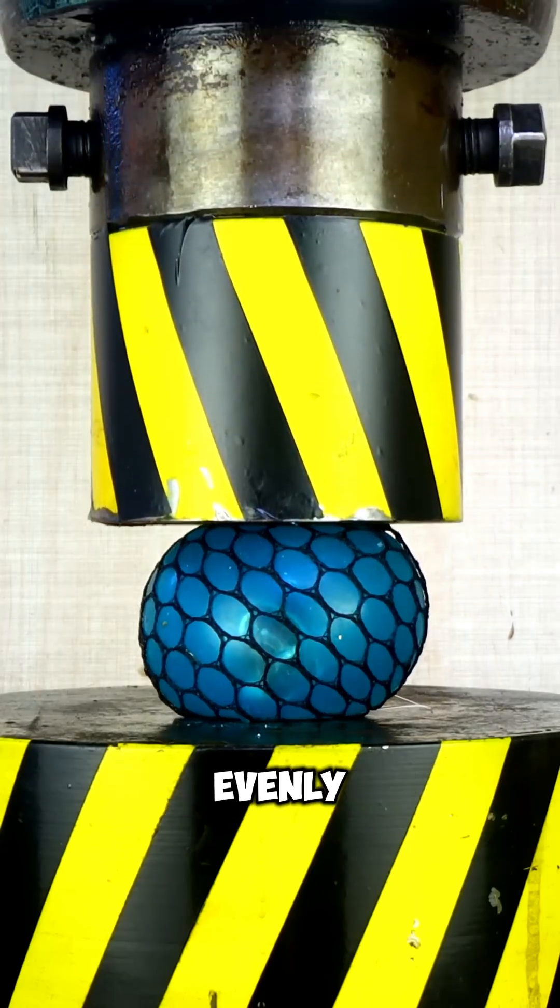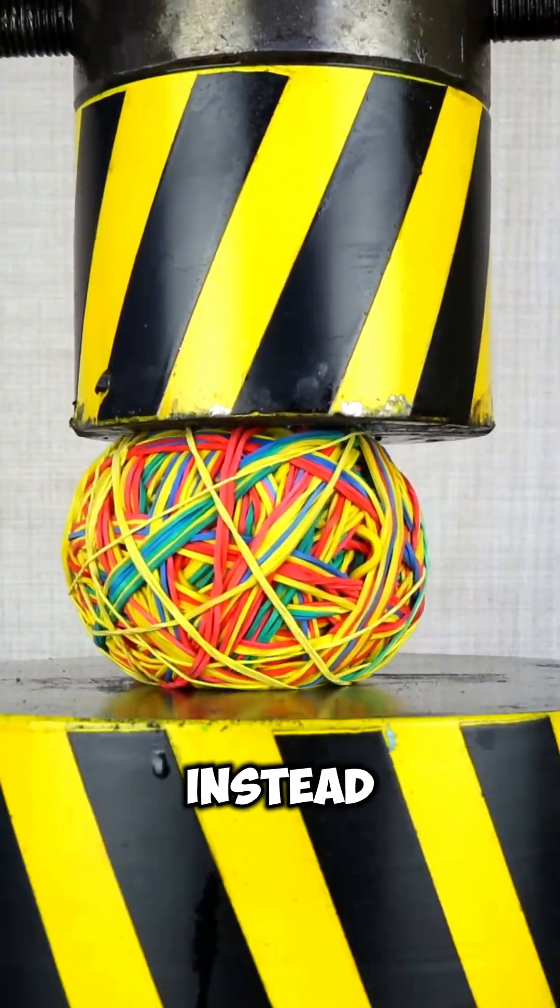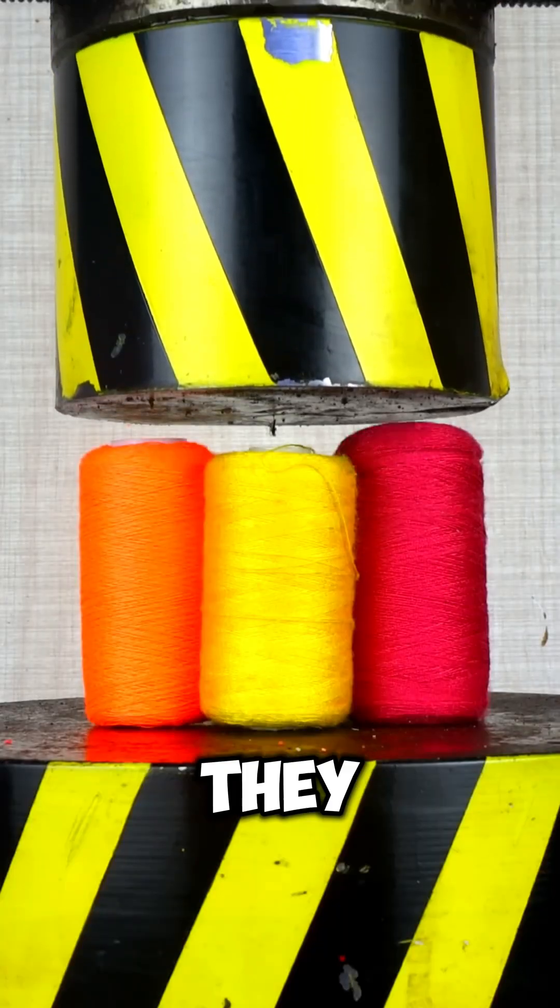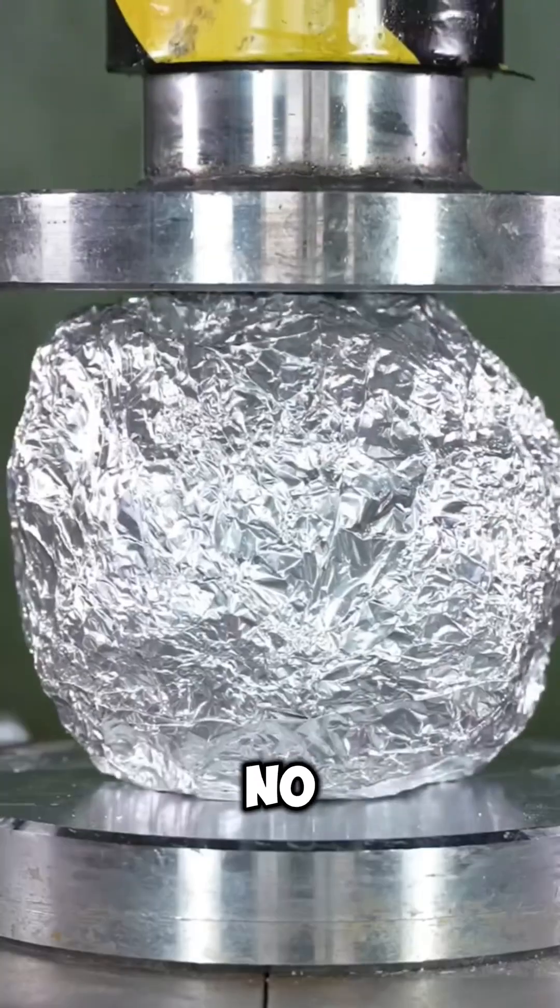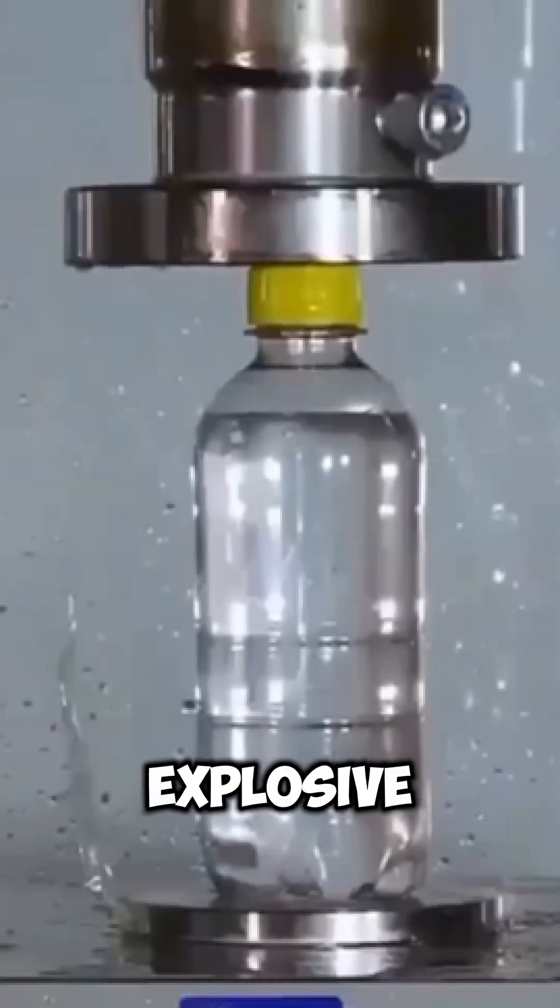They absorb and spread pressure evenly across their structure. Instead of storing up energy like paper, they deform and flatten. No trapped air means no explosive burst.